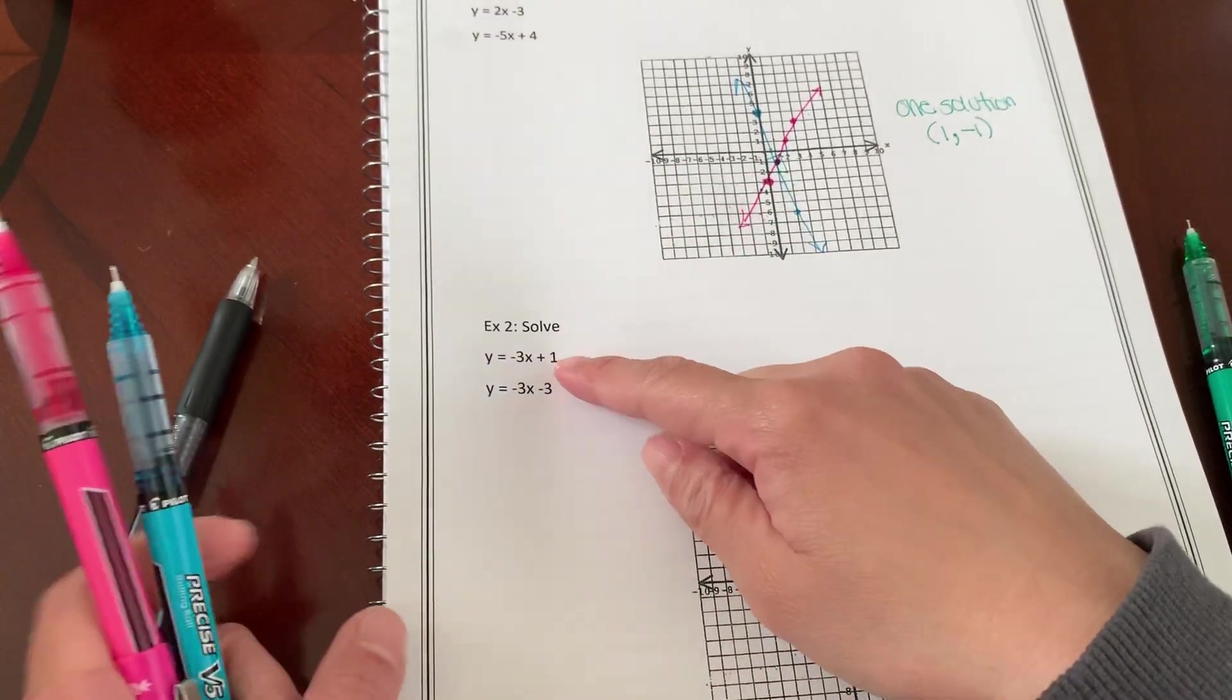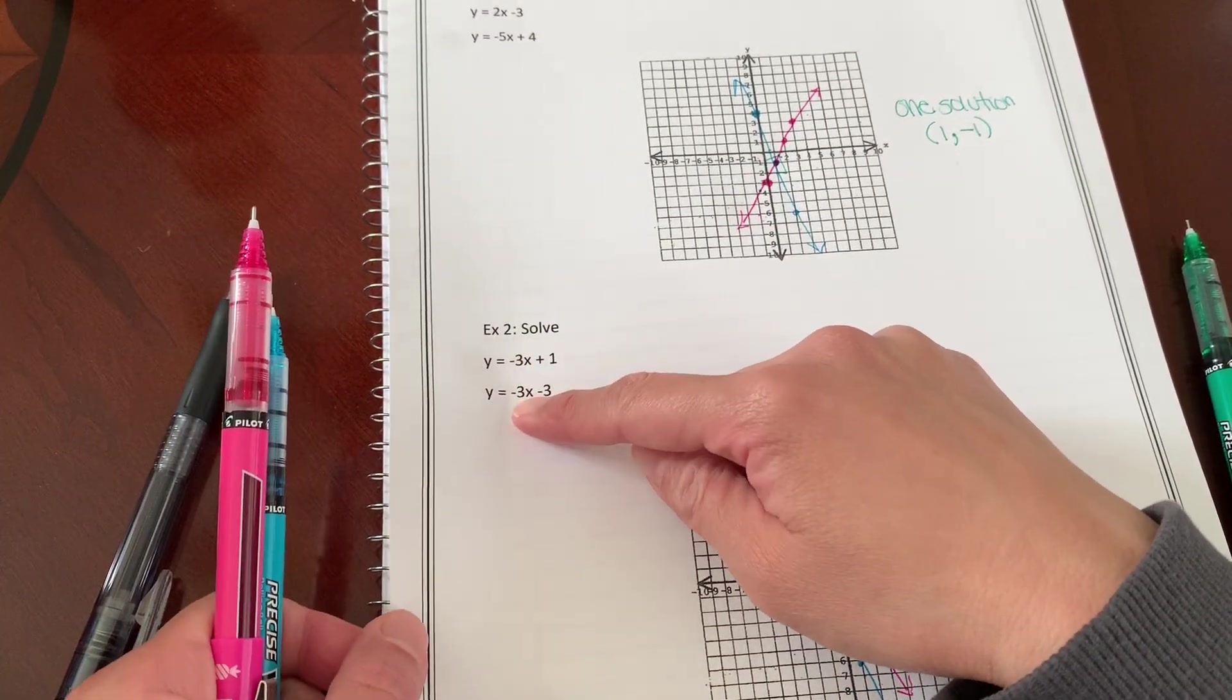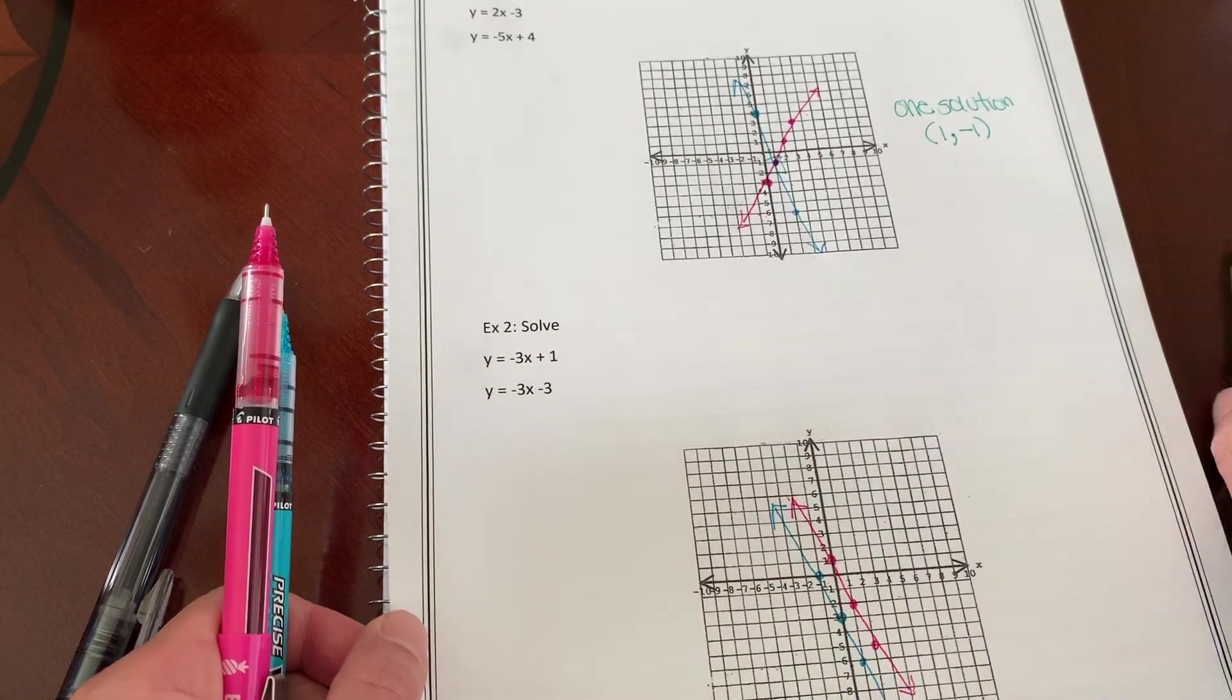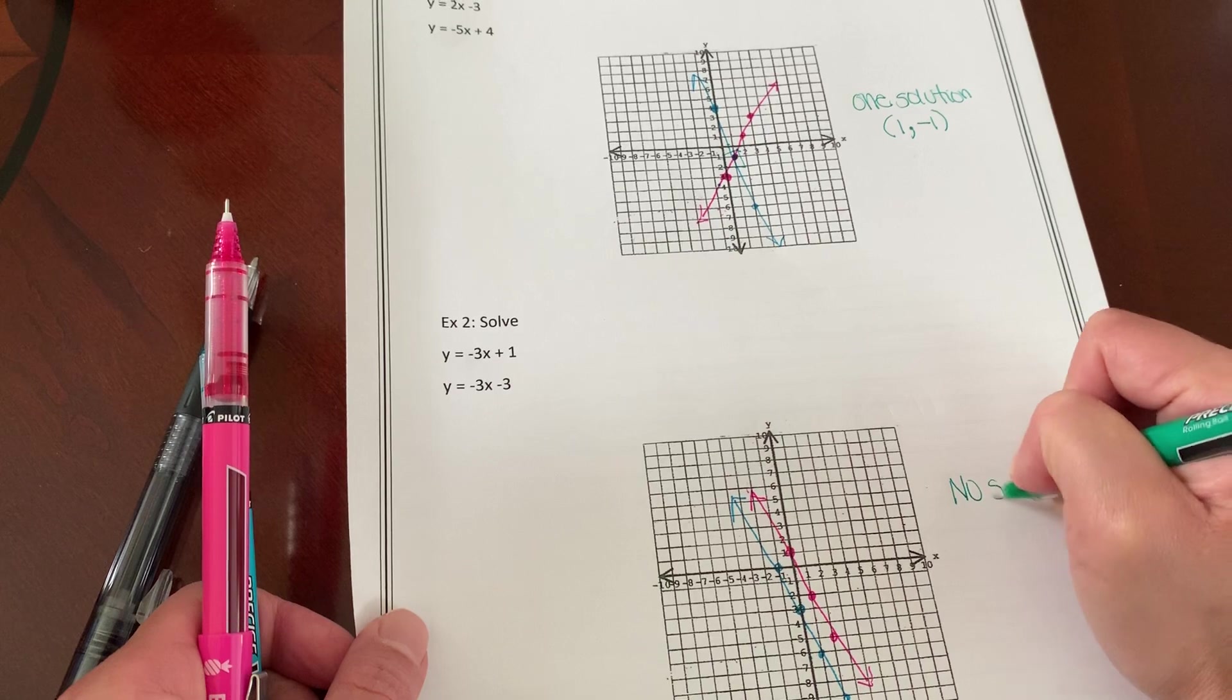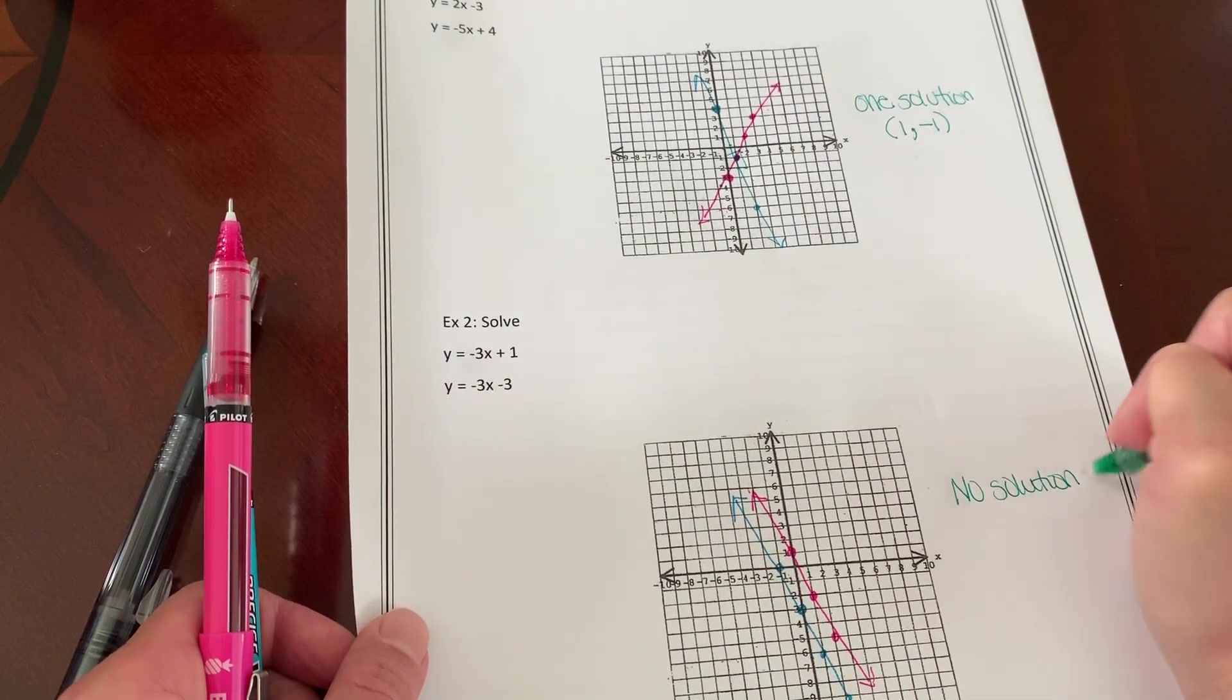Okay, so I noticed that if my slope is the same, my lines are going to be parallel, which means I'm going to have no solution.